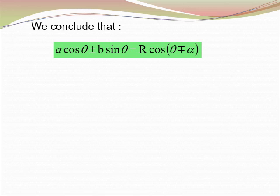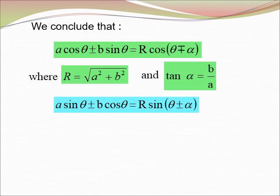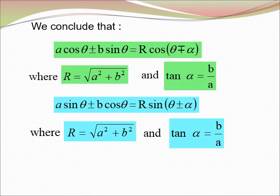We conclude that A cos θ ± B sin θ = R cos(θ ∓ α), where R = √(A² + B²) and tan α = B/A. For A sin θ ± B cos θ = R sin(θ ± α), where R = √(A² + B²) and tan α = B/A.